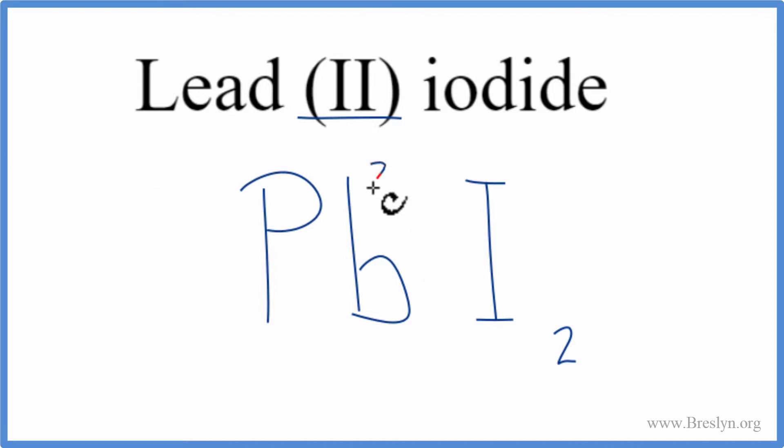Lead, we said was 2+, because of the Roman numeral. We looked up iodine on the periodic table. It was a 1-. We have two of these iodine atoms, so 2 times 1- gives us 2-. 1 times the 2+ gives us 2+. So 2+ and 2-, that adds up to 0.